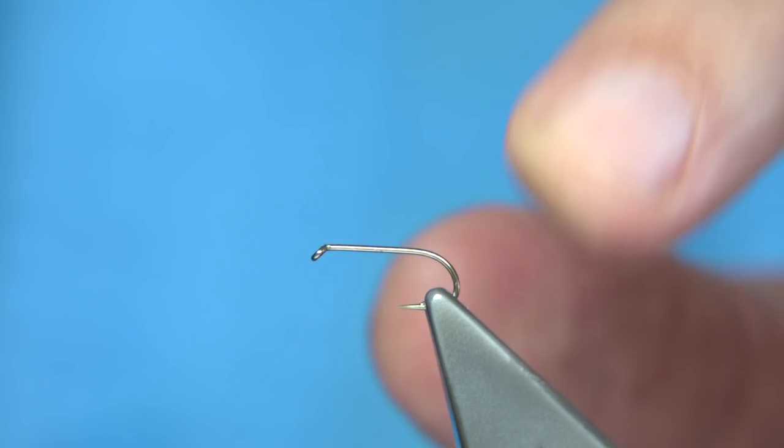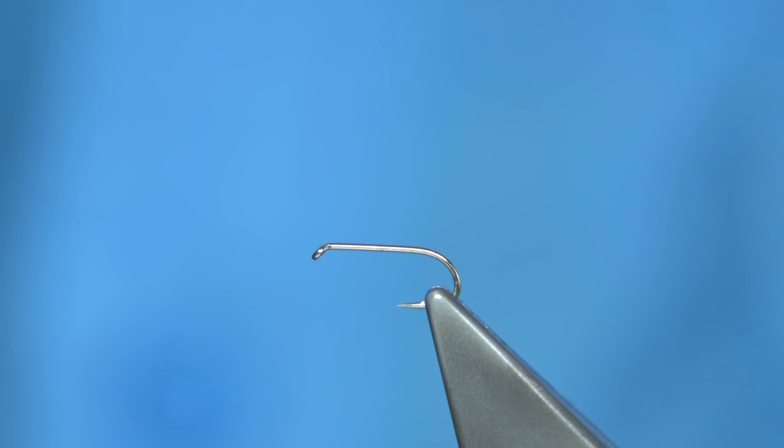Now, the hook I'm using is an all-purpose medium, size 14. This one's from Fulling Mill, and it's simple. Now, you can run the wax through it, it does help. Just run it through once, which gives you a bit of extra grip.